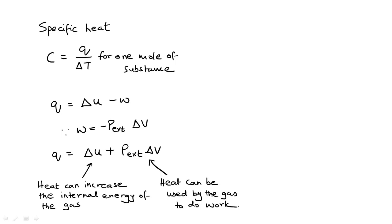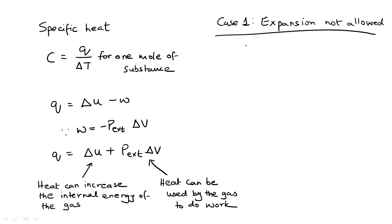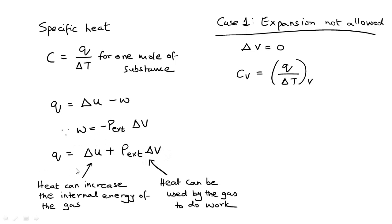Let us now consider two special cases in which a gas absorbs heat. The first case is when expansion of the gas is not allowed, so the volume is constant and ΔV is equal to zero. In this case, the specific heat of the gas at constant volume, denoted as Cv, is defined. We can see that if the gas is not allowed to expand, then the heat absorbed simply causes a change in its internal energy, so Cv is equal to ΔU by ΔT.